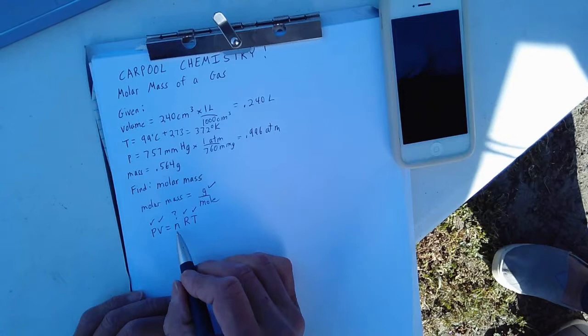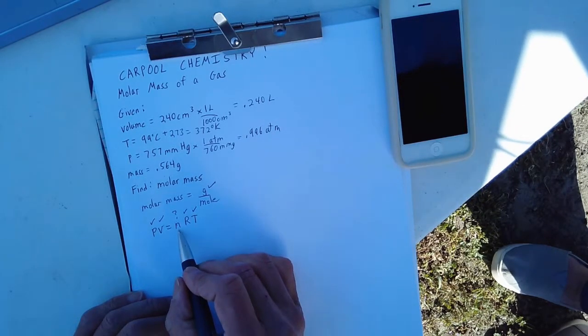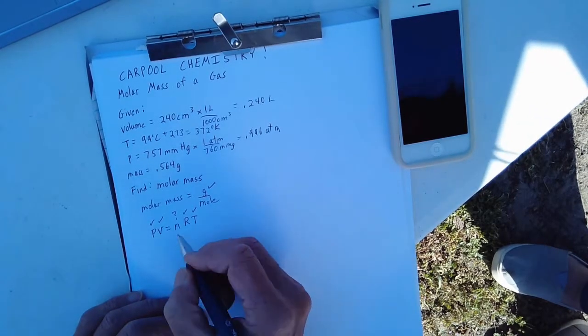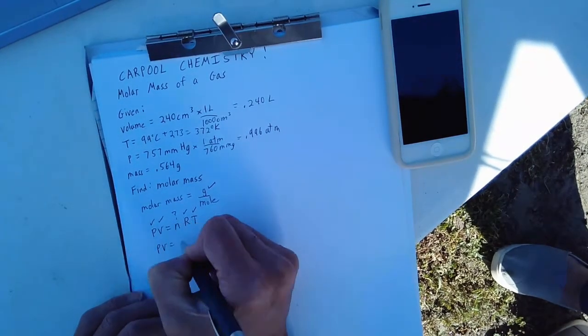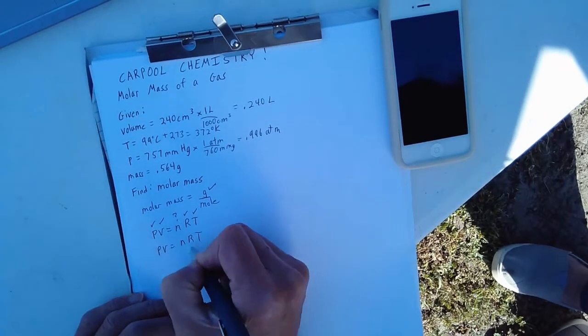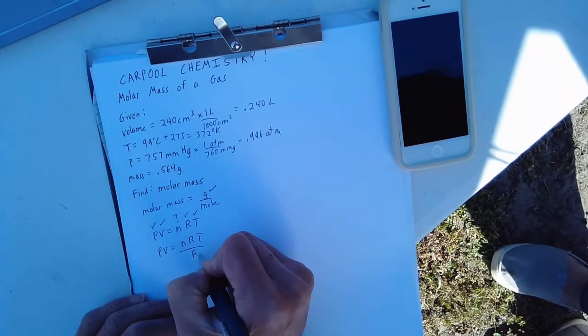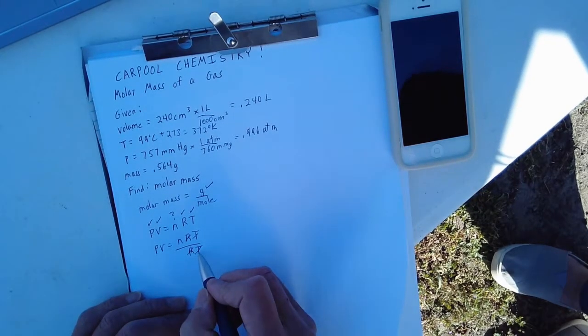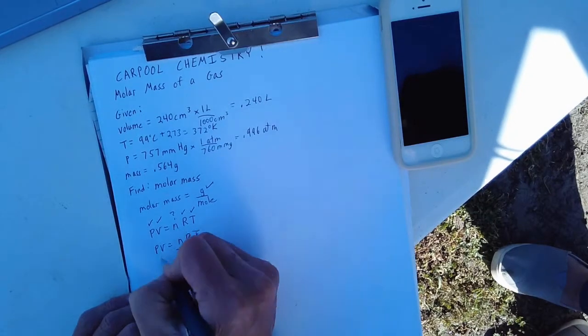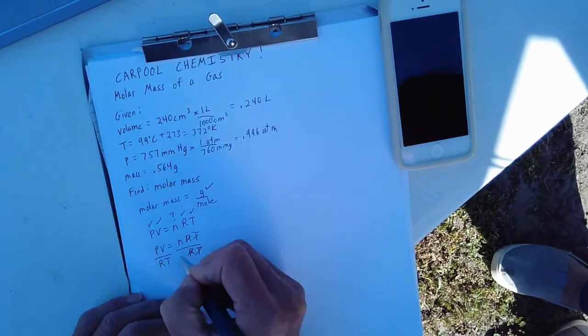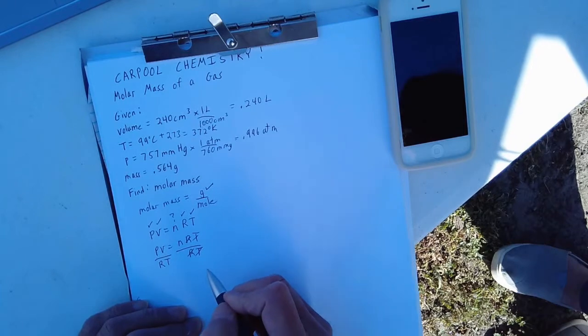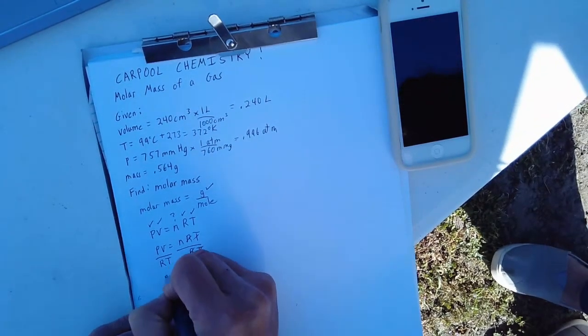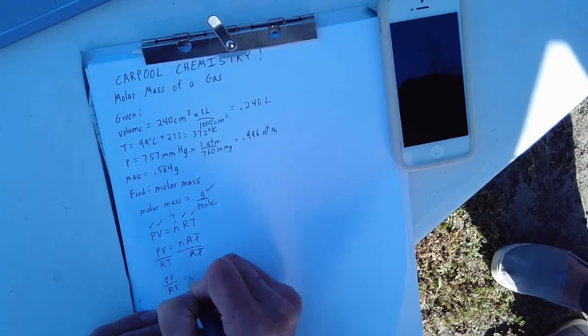And so now we could simply use algebra to find the value for n and then plug it into our formula for molar mass. How do we get n all by itself? Well, from algebra, you simply divide the right side by R and T so they cancel out. But if we divide the right side by R and T, what must we do to the left hand side? We must also divide by R and T in order to keep things equal. Clean this up a little bit. PV over RT is equal to n.